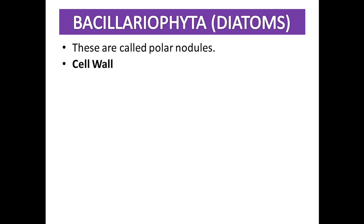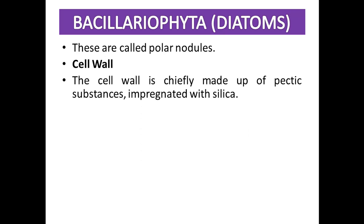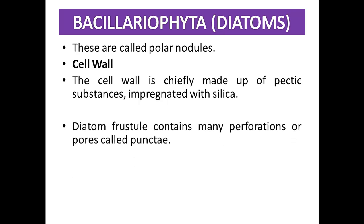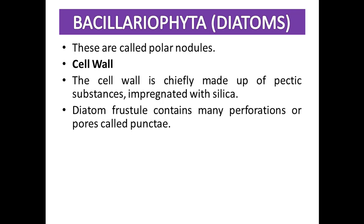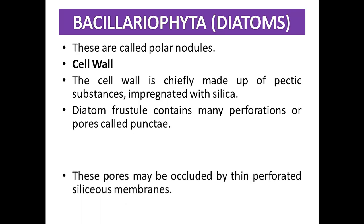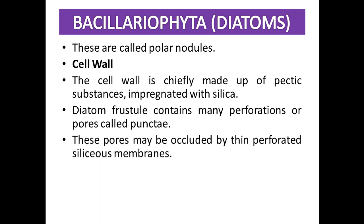The cell wall is chiefly made up of pectic substances impregnated with silica. Diatom frustules contain many perforations and pores called punctae. These pores may be occluded by thin perforated siliceous membranes.